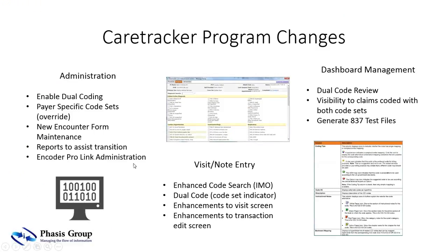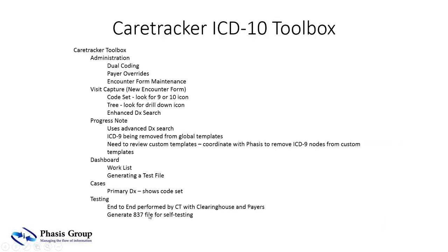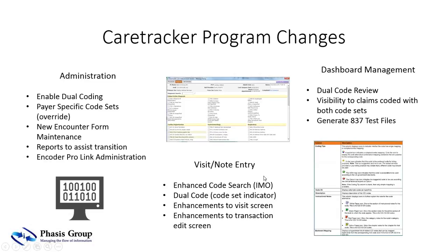Encoder Pro is a coding software that Ingenix has had for about 20 years. It lets you find out why a code may not be payable, map from ICD-9 to ICD-10, and look up payable amounts. You can enable its full capability within Care Tracker with a subscription purchased through Care Tracker. Now let me show you visit note entry — I'll demonstrate searching for ICD-10 codes in both a visit and a progress note.